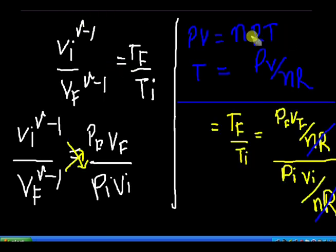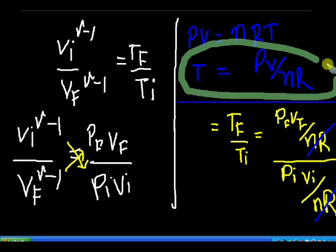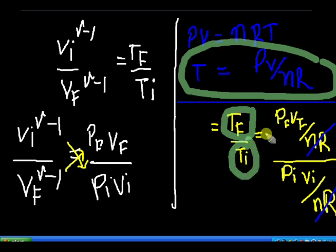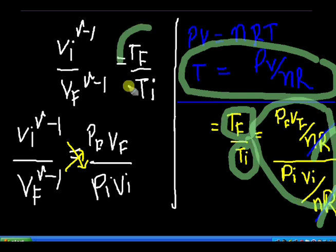We know that PV equals nRT, that is the ideal gas equation, so T can be written as PV/nR. Taking this relation for Tf and Ti, we get Tf/Ti equal to (Pf Vf / nR) divided by (Pi Vi / nR). The nR terms cancel and we get Tf/Ti equal to Pf Vf by Pi Vi.